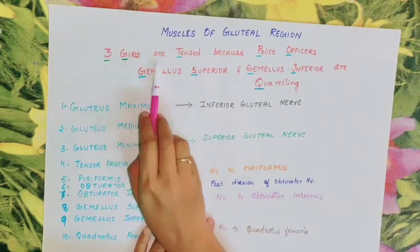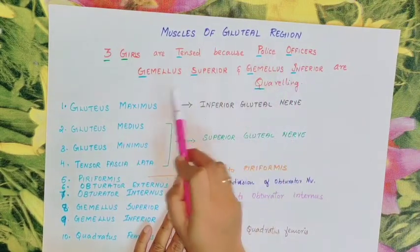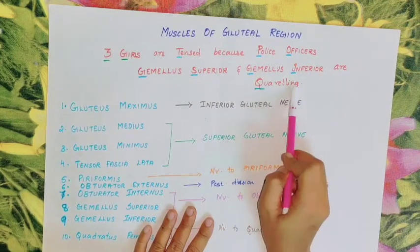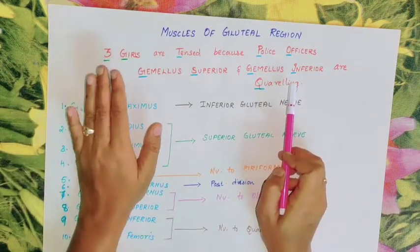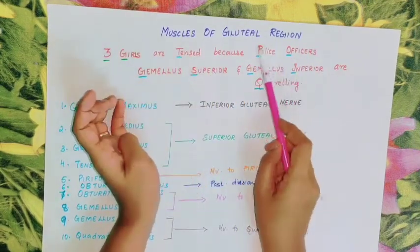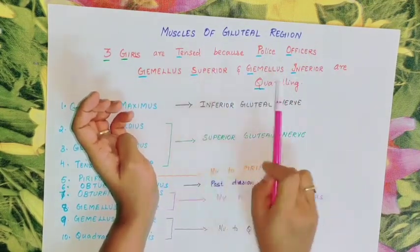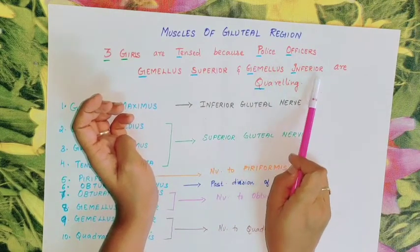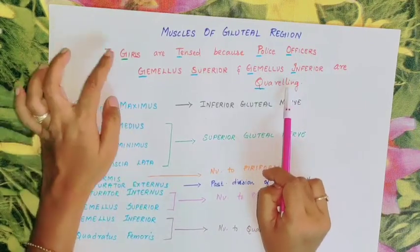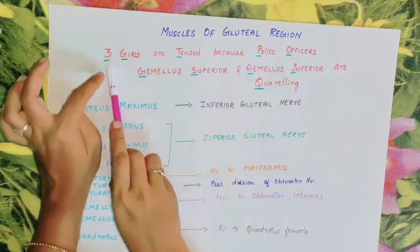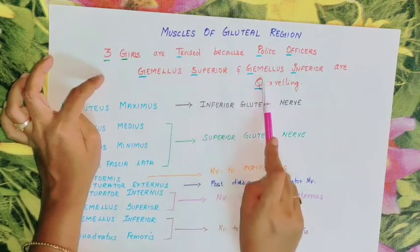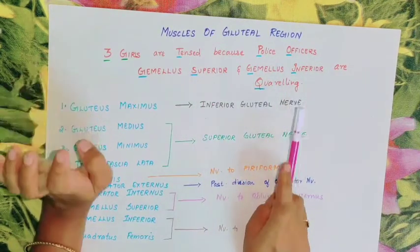Here is the mnemonic: Three girls are tensed because police officers are quarreling. The police officers are called Gemellus Superior and Gemellus Inferior — they are quarreling and fighting. That is why the girls are tensed.